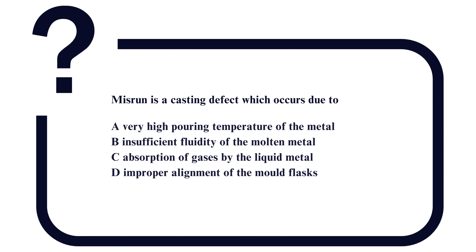The question is: misrun is a casting defect which occurs due to — option A: very high pouring temperature of the metal; option B: insufficient fluidity of the molten metal; option C: absorption of gases by the liquid metal; and option D: improper alignment of the mold flask.